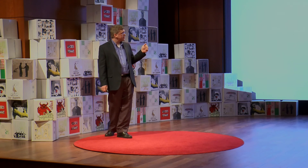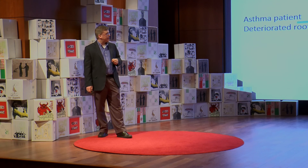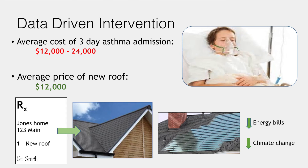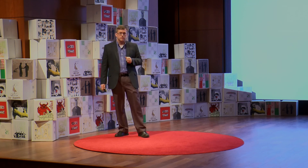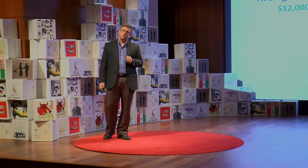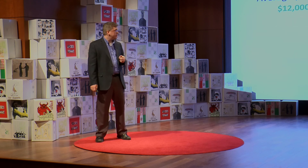Here's what happens: you can identify patients with asthma from households that are in a home with a deteriorated roof. It turns out that the cost of a three-day inpatient asthma admission is $12,000 to $24,000. The average price of a new roof: $12,000.